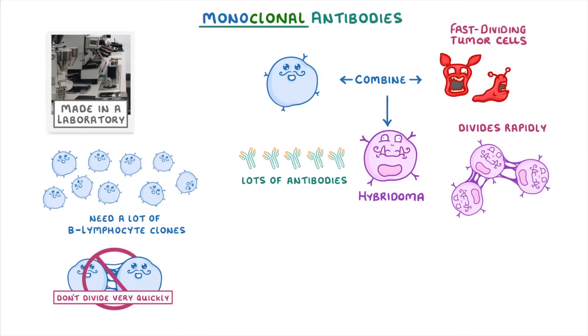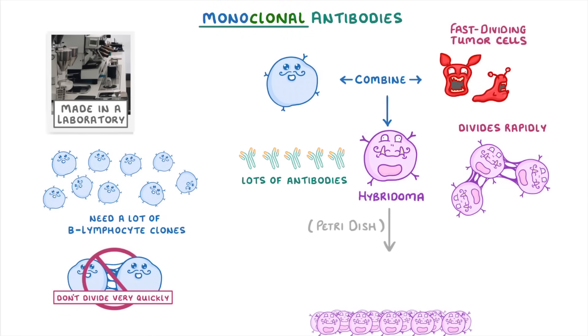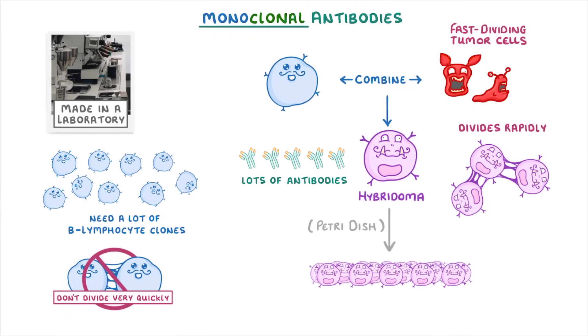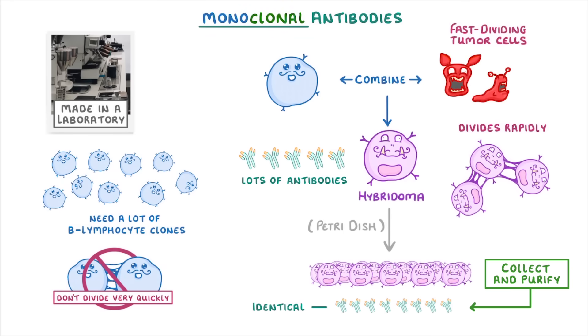So by leaving the hybridoma cell to divide for a while in a petri dish, we end up with an army of hybridoma cells that all produce identical antibodies that we can then collect and purify.